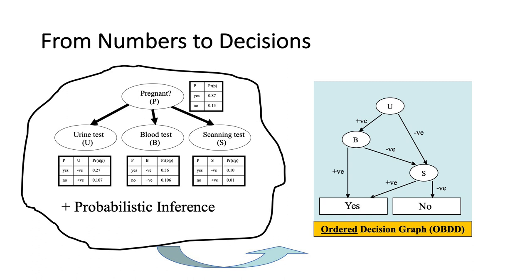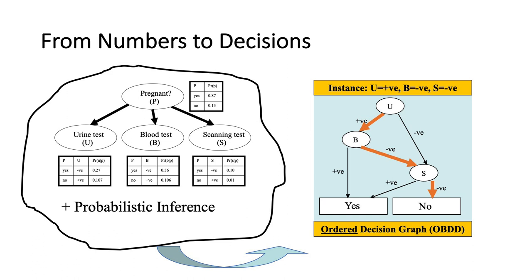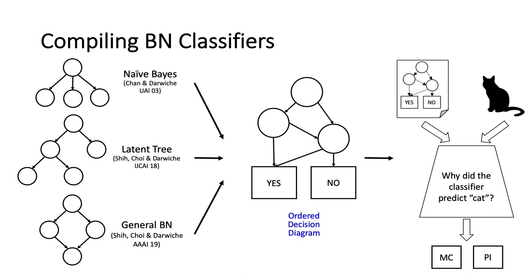It's important to note that the machine learning system and the symbolic decision graph make the exact same decisions on instances - this is guaranteed by the compilation algorithm. Interestingly, the algorithm for compiling naive Bayes classifiers to ordered decision diagrams is quite old, about 15 years. We recently generalized this to tree structures, and just this year generalized it to arbitrary Bayes network structures.